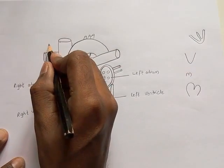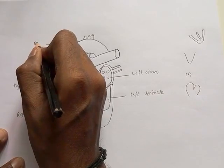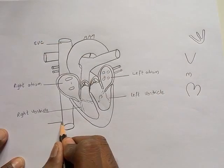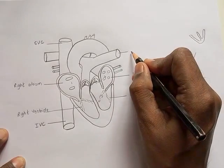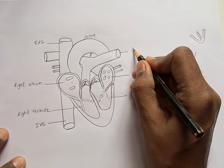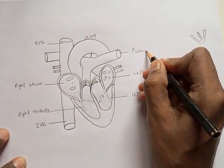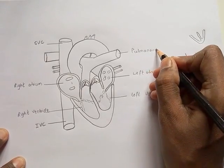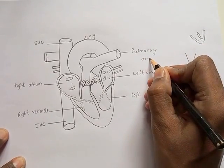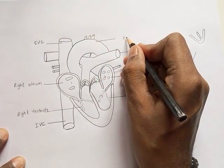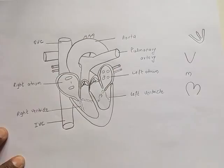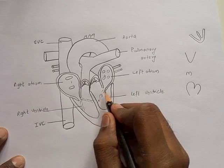The part which brings the deoxygenated blood is superior vena cava, inferior vena cava. This part which takes the deoxygenated blood to the lungs is called pulmonary artery. The part which forms the oxygenated blood to all parts of the body is called aorta.